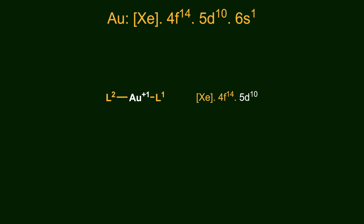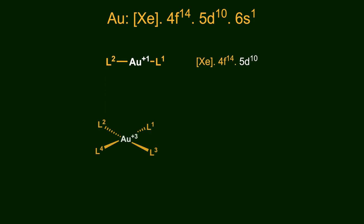That being said, when gold is in the +3 oxidation state, it fully embraces its transition metal character. It almost exclusively adopts the square planar coordination geometry, typical of the heavy D-8 metal ions, and exhibits completely different structural and reactive properties compared to gold(+1) compounds.